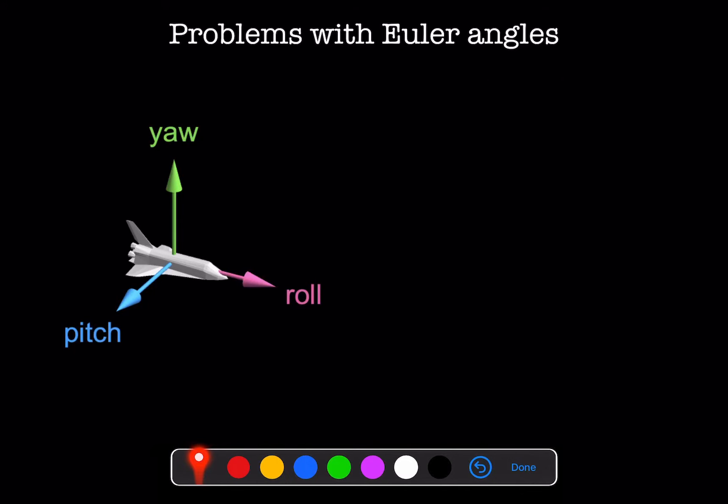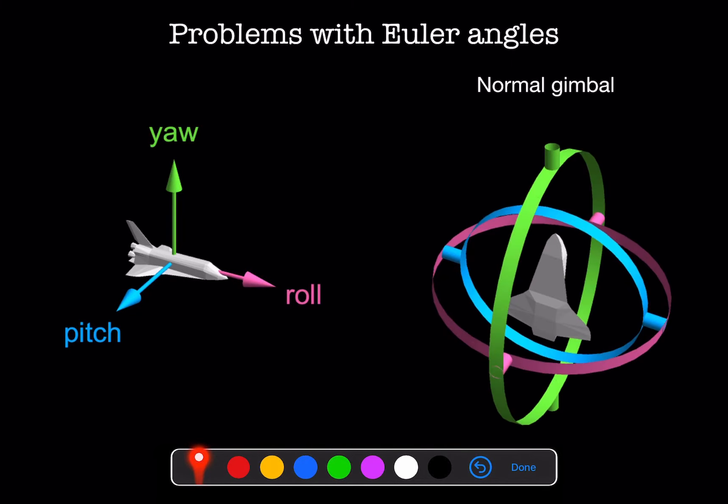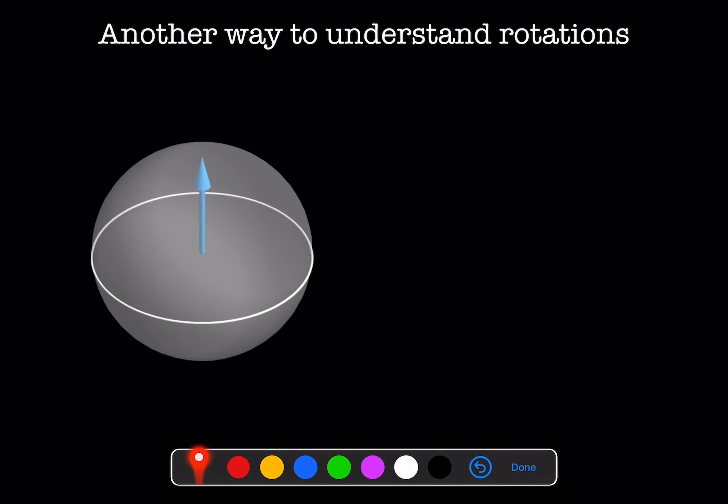Another problem is that interpolating between two rotation states using Euler angles doesn't make physical sense, as you can see from this animation. Imagine we want to describe the direction that a vector is pointing in. We could do that using coefficients multiplied by unit vectors, which is pretty much the standard thing we do in physics.